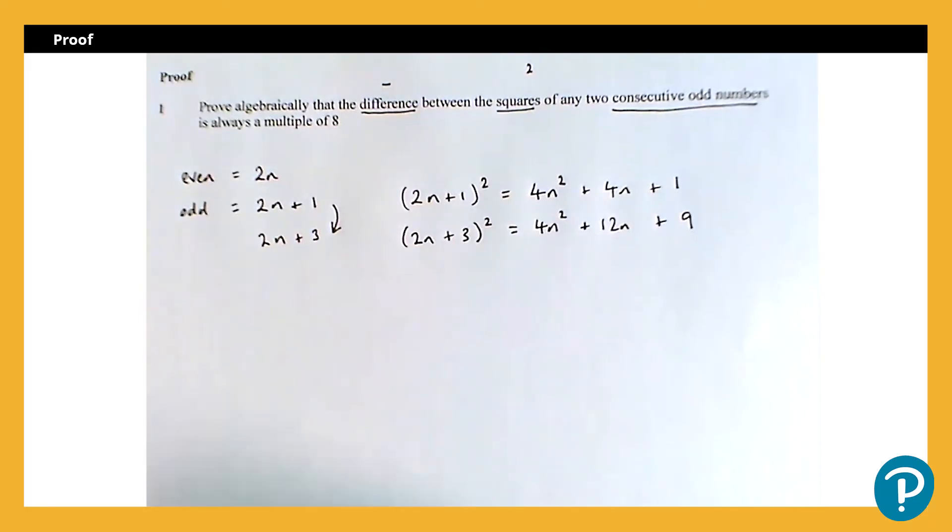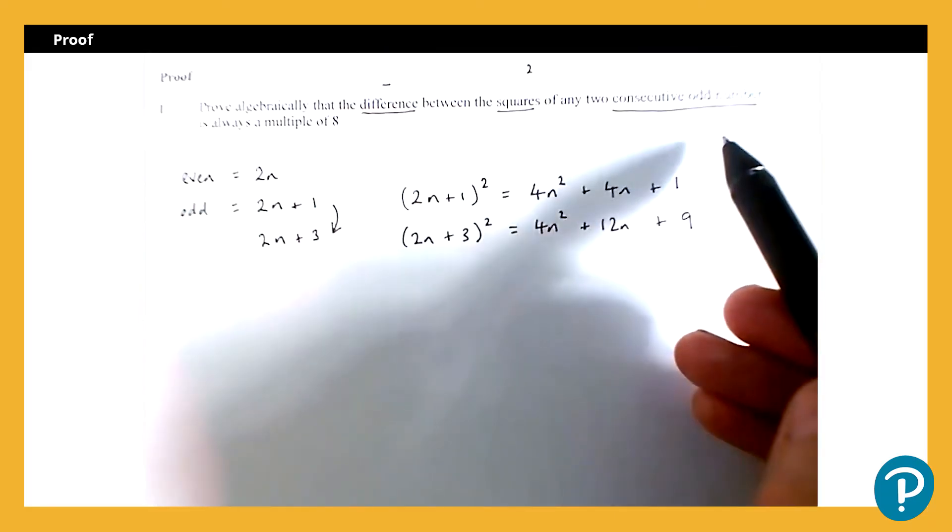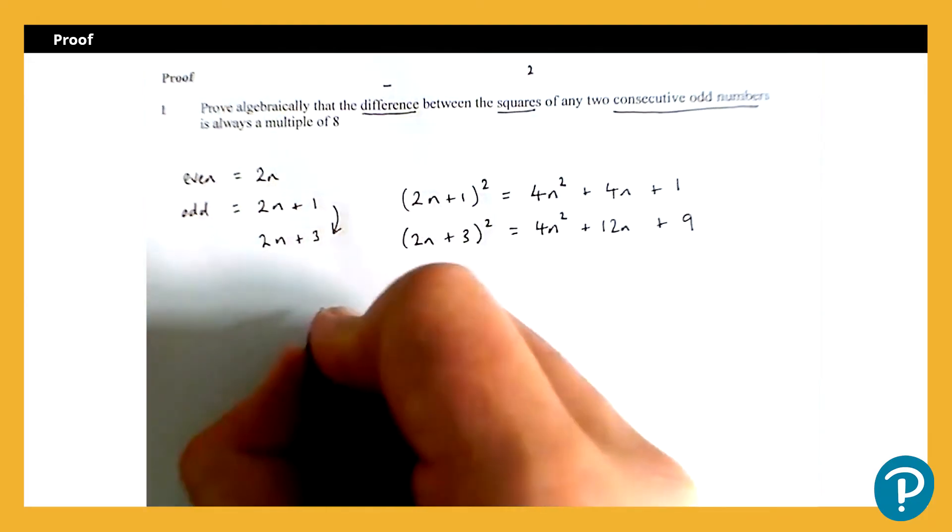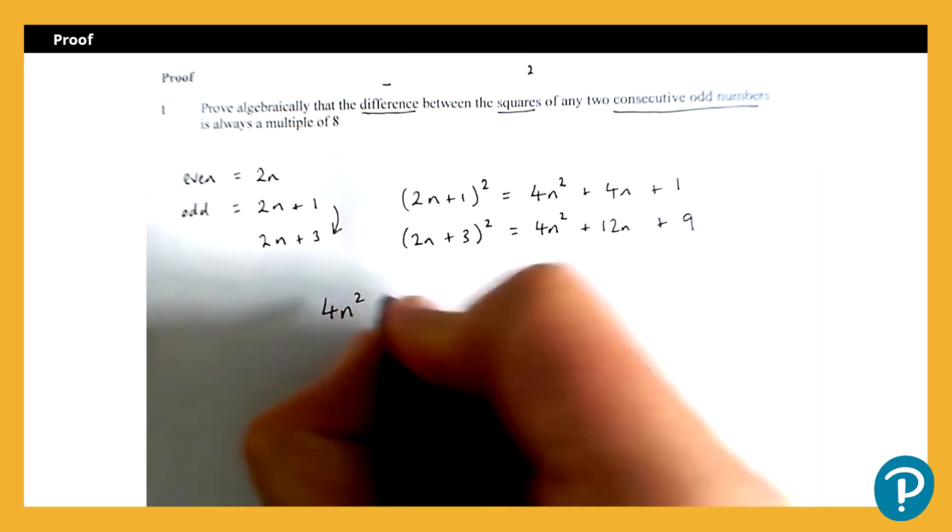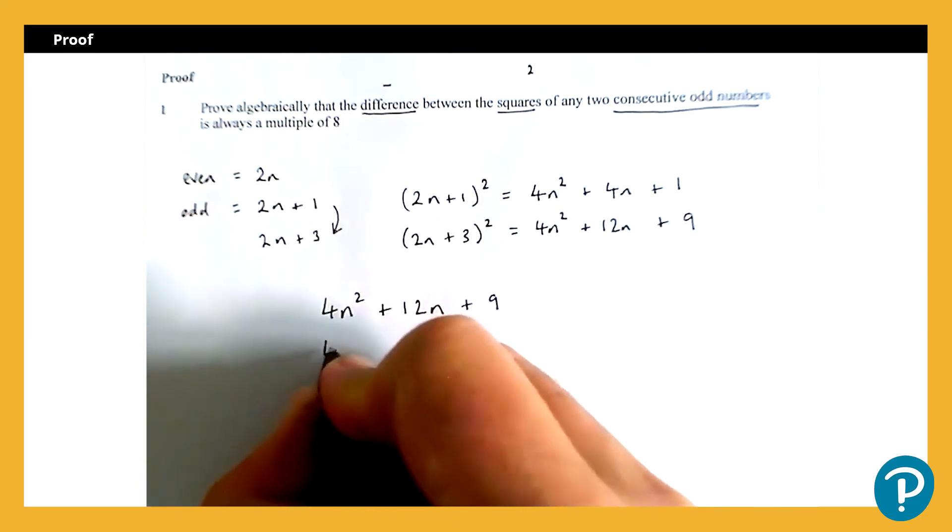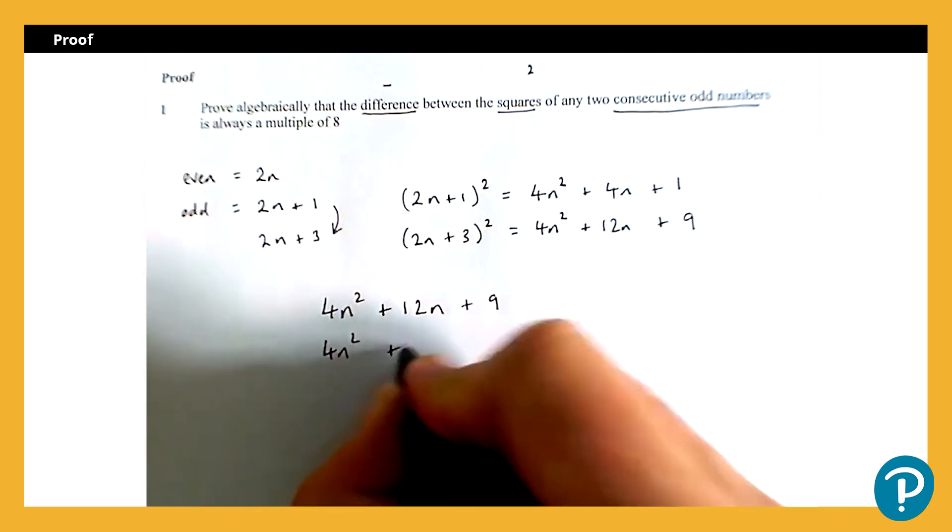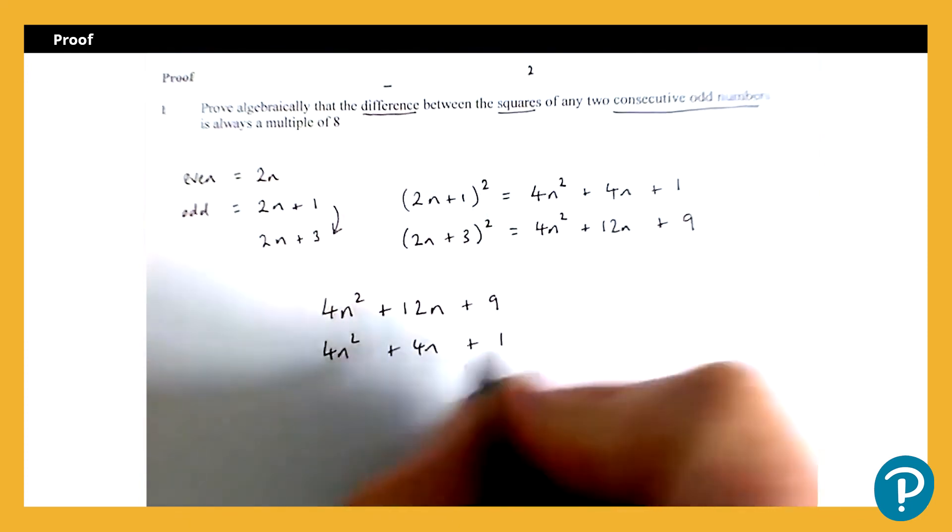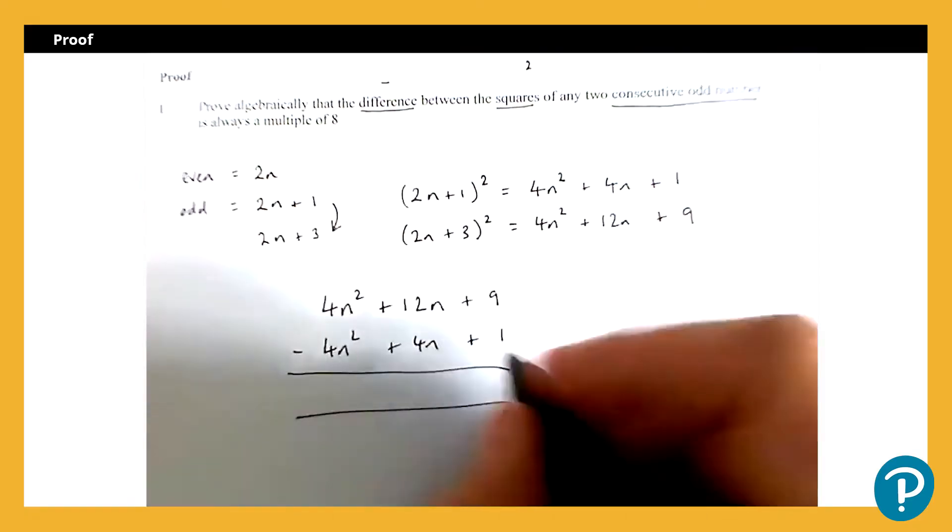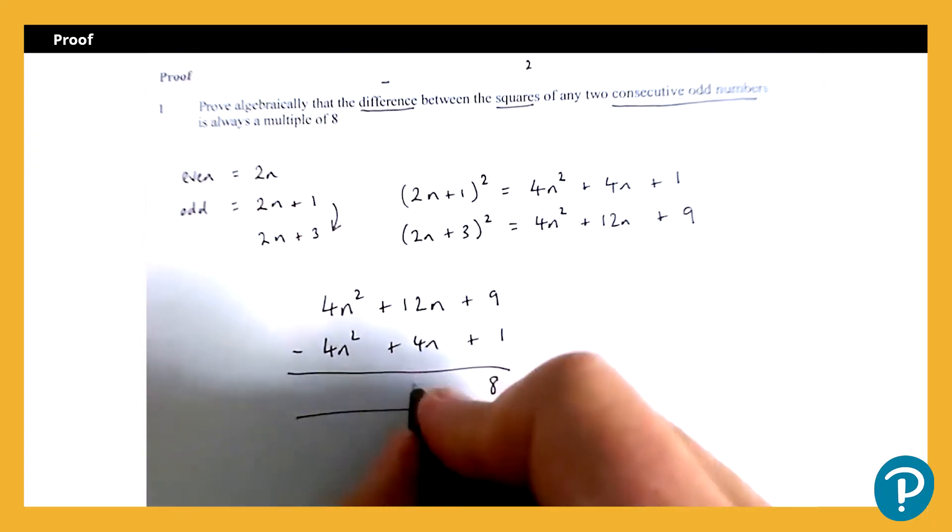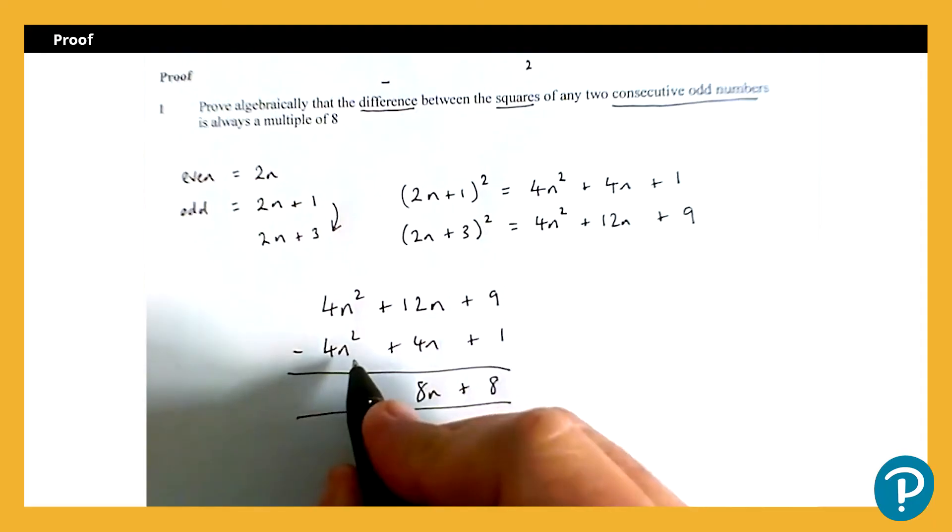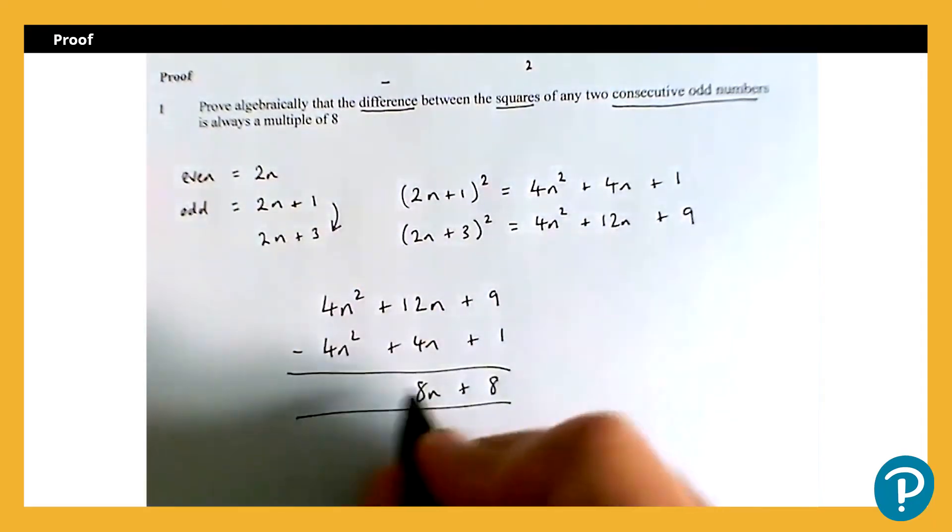So I've got my squares of my consecutive odd numbers, and I now need to find the difference. I'm just going to rewrite these, but the other way around, because we're going to do the larger one subtract the smaller one. So 9 take away 1 will leave me 8, 12n take away 4n will give me 8n, and 4n squared take away 4n squared is nothing. So that's my final expression there.